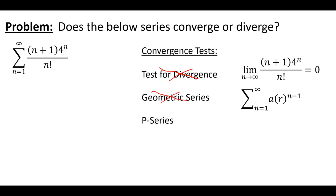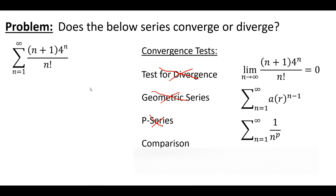Next, you might want to test a P-series, but that has to be in a very exact format, which is not close to the format we have here, so we can cross this one out. You could also consider a comparison test; however, to use it, this series would have to look similar to a geometric or P-series, which it doesn't. So we cross this out as well.